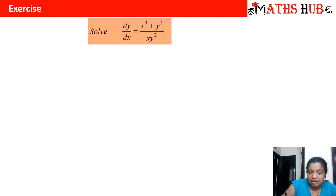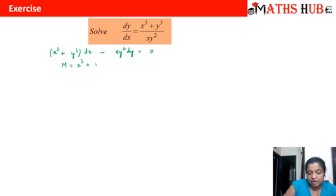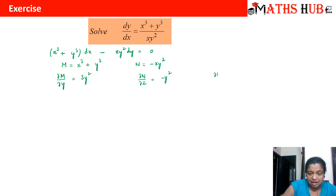Let us first put it in the form of a standard differential equation. On cross-multiplying and rearranging, we get (x³ + y³) dx - xy² dy = 0. Comparing with M dx + N dy = 0, M = x³ + y³ and N = -xy². Now ∂M/∂y = 3y² and ∂N/∂x = -y². So ∂M/∂y ≠ ∂N/∂x, confirming it is a non-exact differential equation.